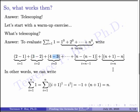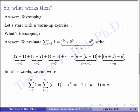In fact, if you keep looking at this, you quickly realize the only thing that survived is minus 1 from the first term and n plus 1 from the last term. So this is just minus 1 plus n plus 1, which of course is n. So this telescoping method works for i to the 0: the sum of i to the 0 is n, which we know is correct.